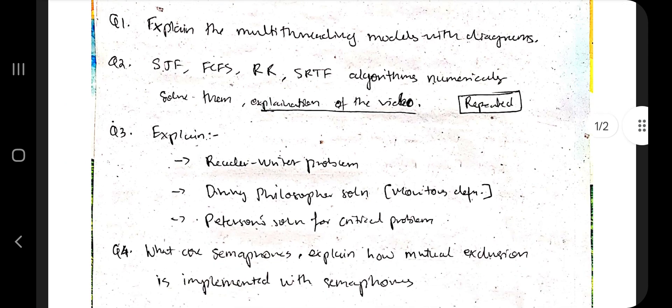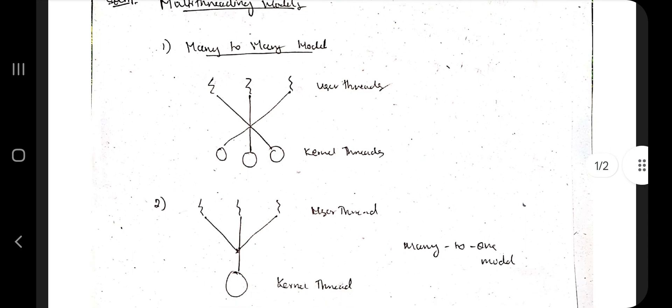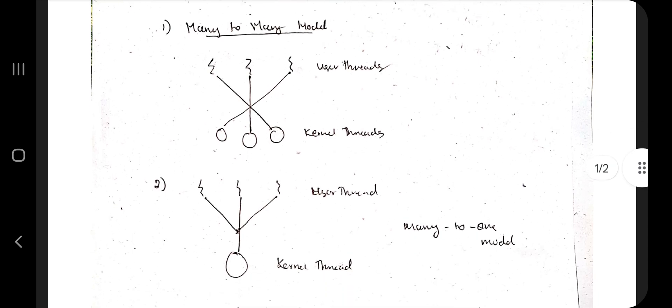Explain the multithreading models with a diagram. Before that, you need to know how many models are there. There are three models: many-to-many models with many user threads and kernel threads. A model connects between the user and the kernel system. User thread is the user, kernel system is the inbuilt system. The many-to-many model will have three connections.